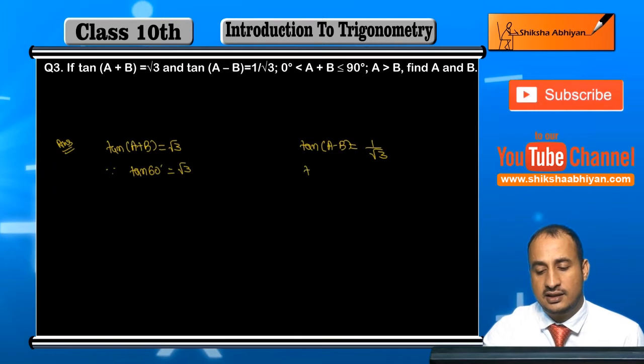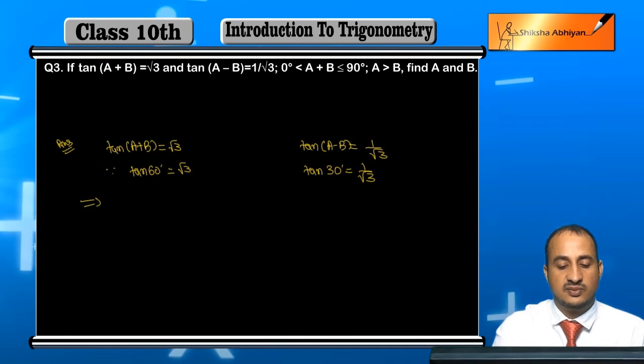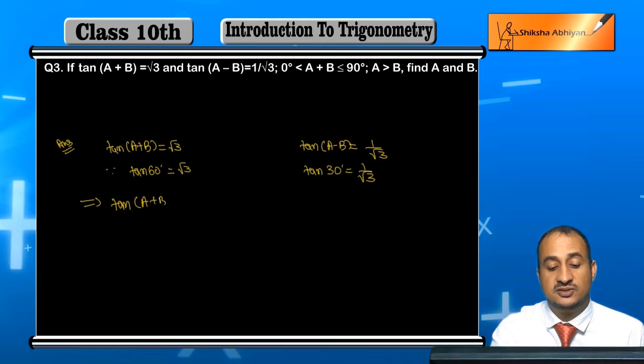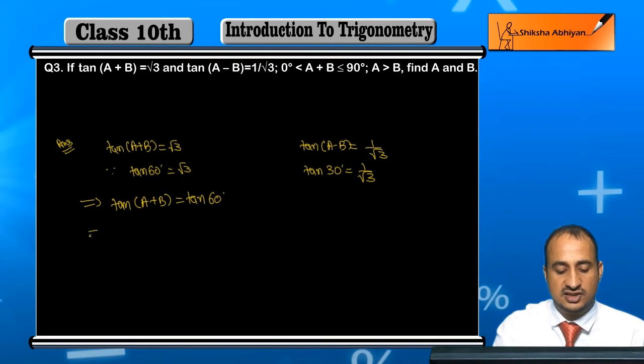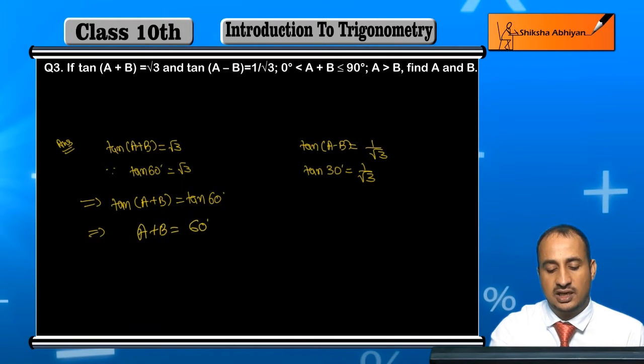Now since tan 60° = √3 and tan 30° = 1/√3, this implies that I can write tan(A + B) = tan 60°, and this finally implies that A + B = 60°.